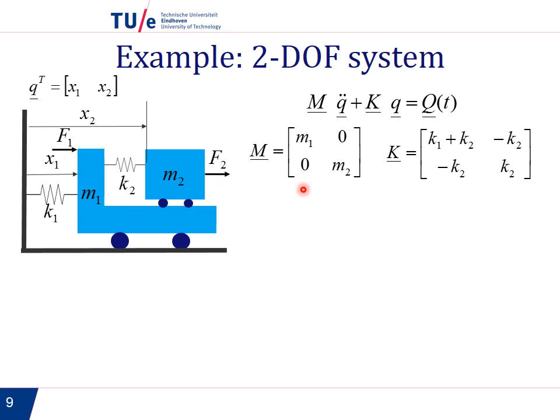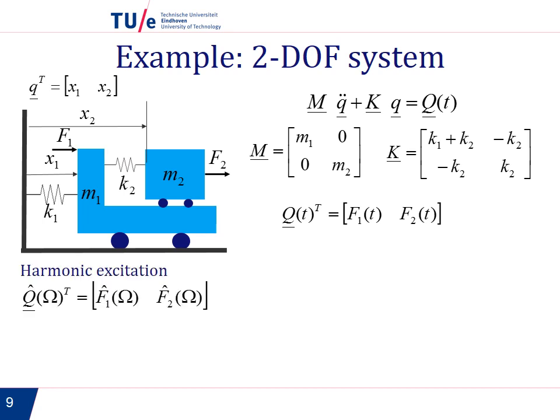And then in principle, we can have a force acting on coordinate 1 and we can also have a force acting on coordinate 2. These are the matrices that correspond to this system. The column of generalized coordinates in general will look like this. We can have a force 1 and we can have a force 2. And if we now consider the complex amplitude of these forces, so we go directly to harmonic excitation, then it will look like this. And the response then will be like this.